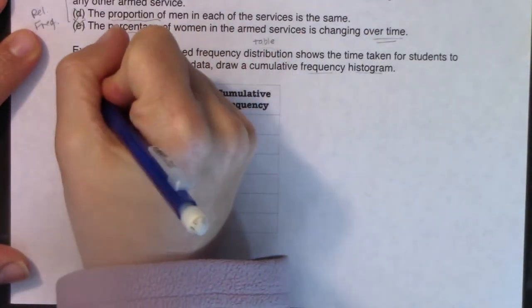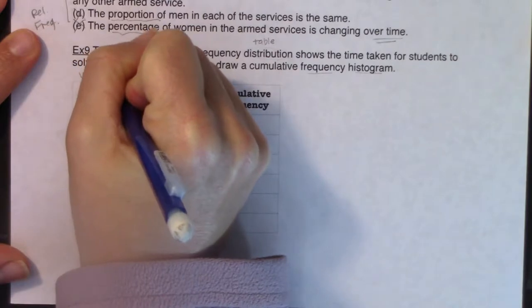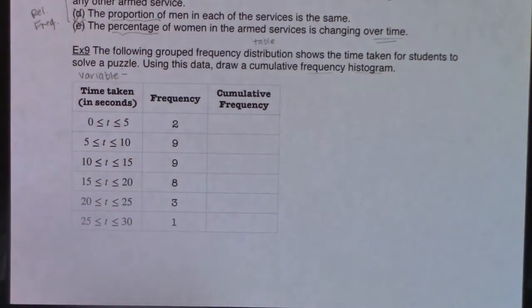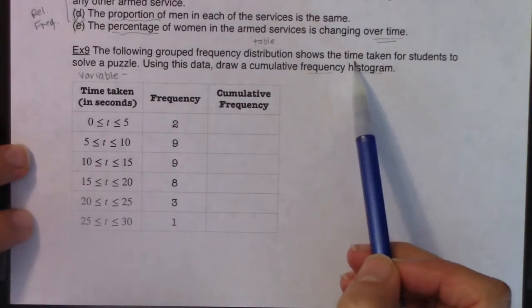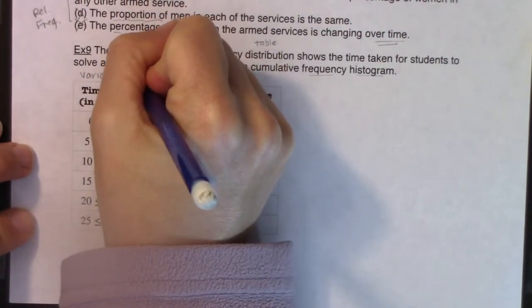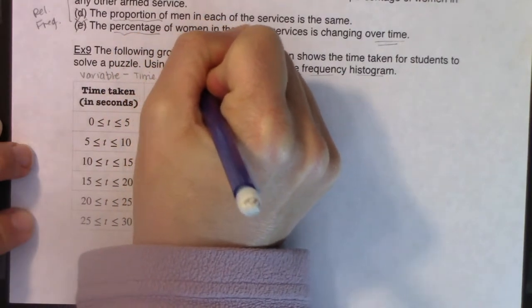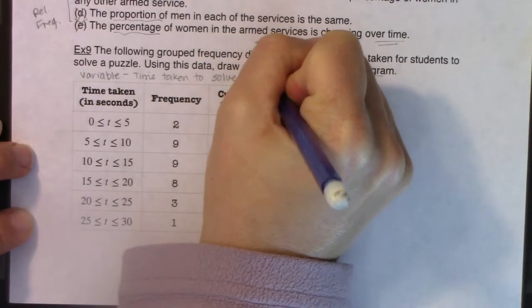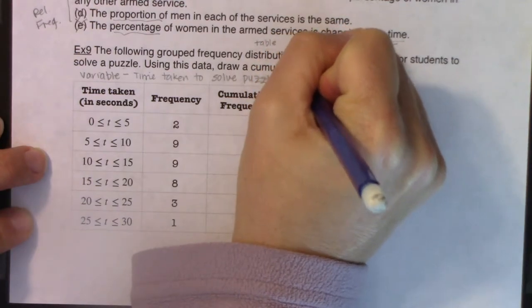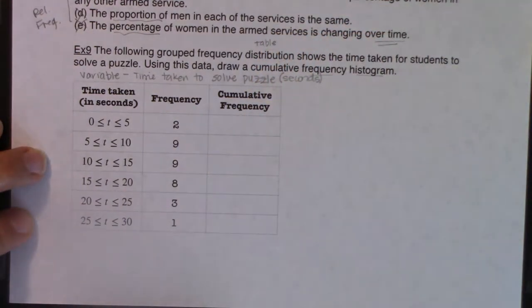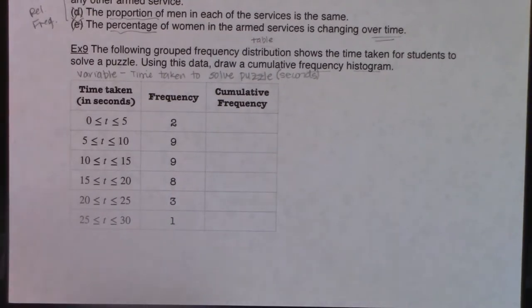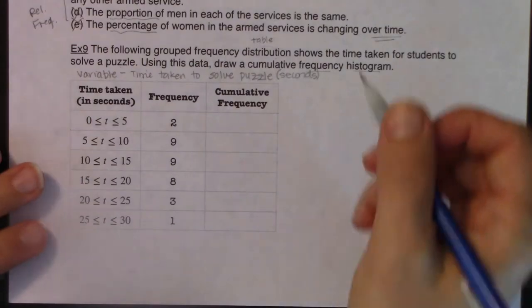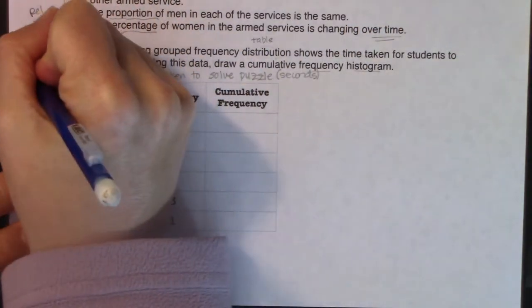What is varying? So I'm going to put that right here, variable, because we want to get into the habit. Every time you read a problem, ask yourself what is varying in this problem? And if I look, it looks like I got a group of students and I'm going to keep track of the time it takes them to solve a puzzle.